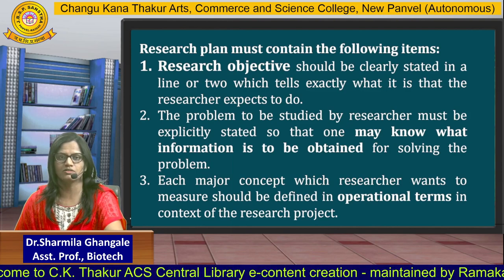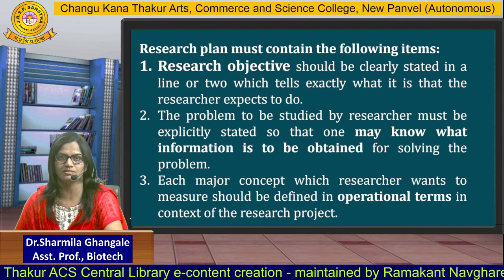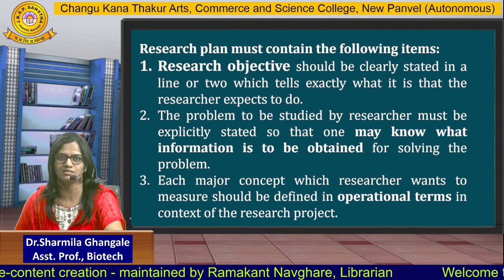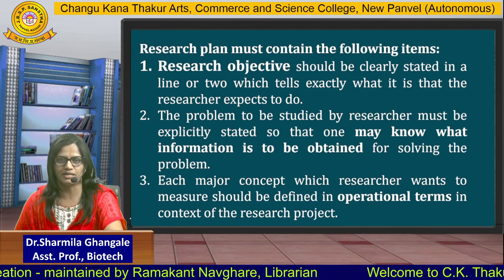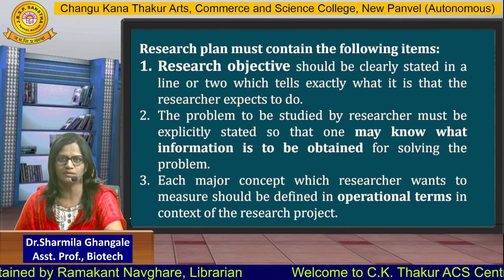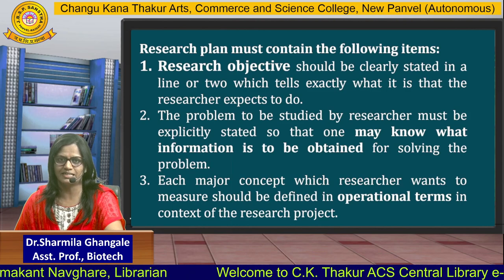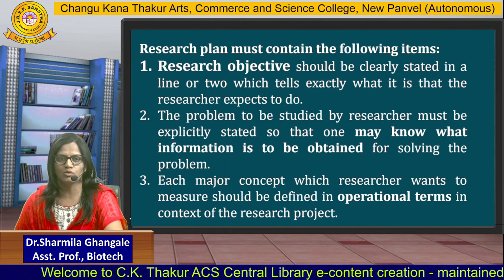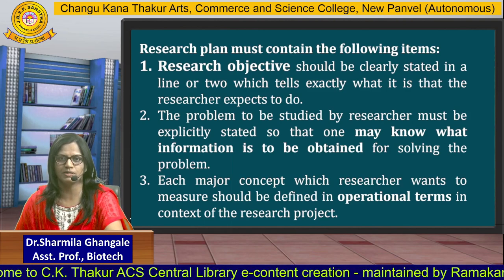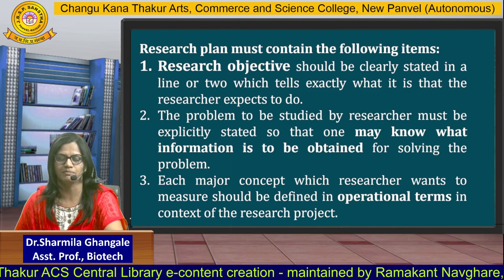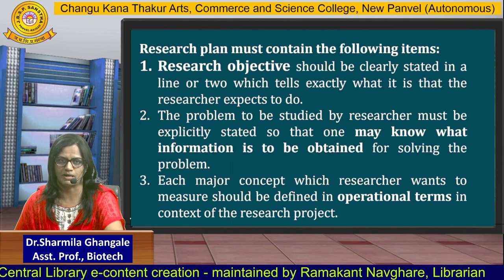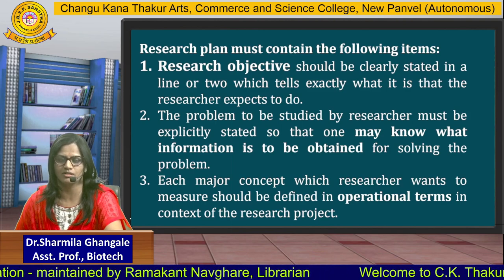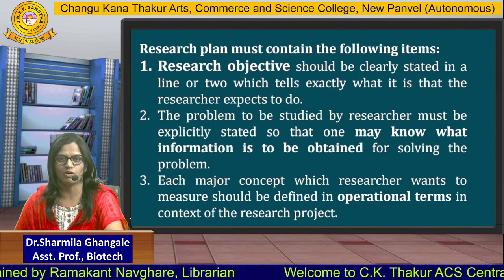In the research plan, the first most important thing to be arranged is the research objective, which clarifies what the researcher is expected to do. The second thing expected is the problem to be studied by the researcher, by which one may know what information is to be obtained. After the objective, the goal, information, or data which has been obtained or collected for solving the problem can also be derived from the research plan. Each major concept the researcher wants to include in the research process will be defined in operational terms, and those operational terms could be incorporated in the research plan.